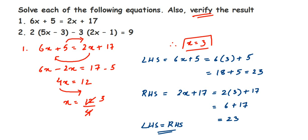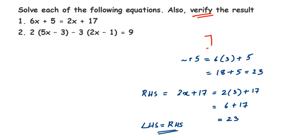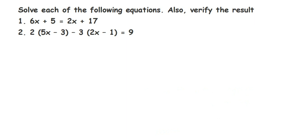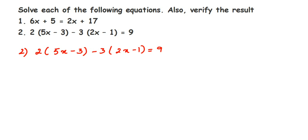Now let's do the second question. In the second one we have brackets: 2 into (5x minus 3) minus 3 into (2x minus 1) is equal to 9. First, we're going to open the brackets — whatever number is outside the bracket, multiply it with the terms inside.